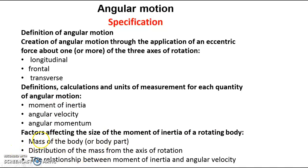Factors affecting the size of the moment of inertia of a rotating body. So we've looked at the mass of the body, distribution of the mass from the axis of rotation, and then this relationship here between the moment of inertia and angular velocity. Really important you've got that in. Your questions should be linked to this.